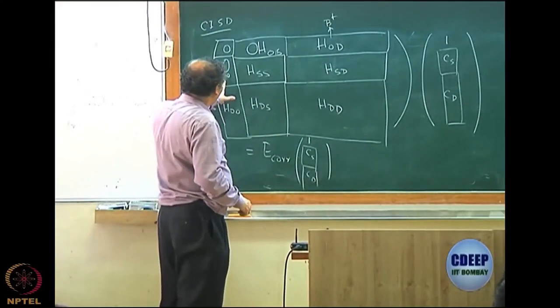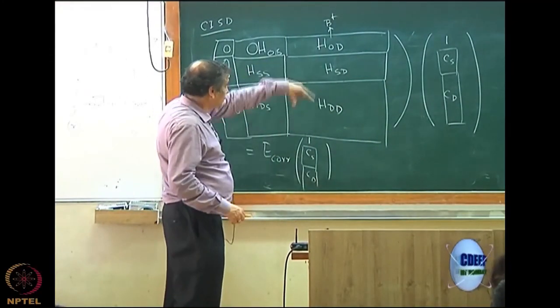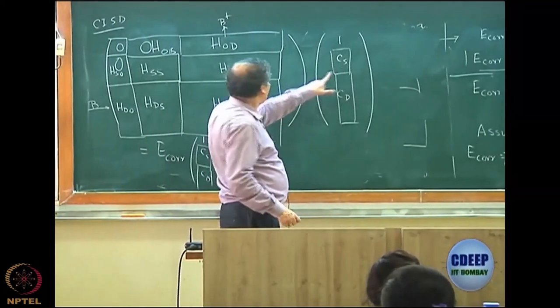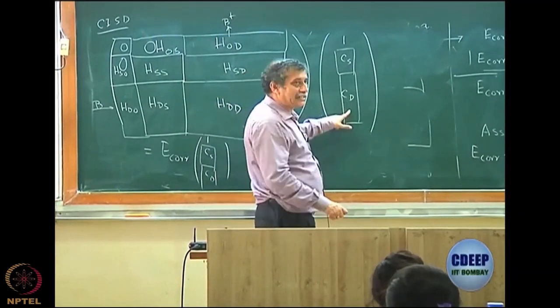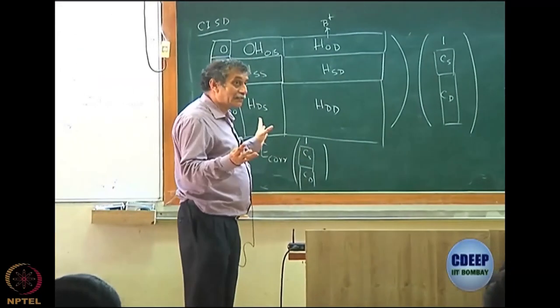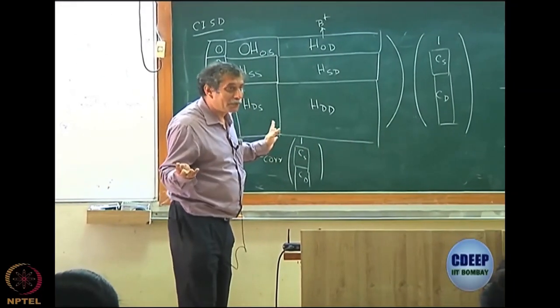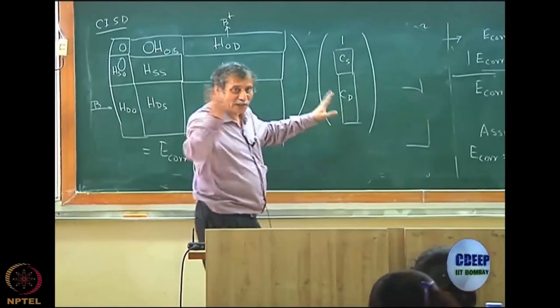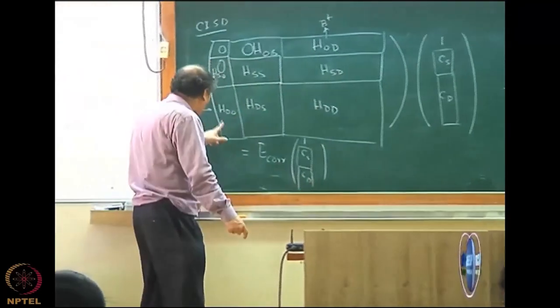This is 0 of course. So this is second row times the column. Now, HSS will act on CS plus HSD will act on CD to give you E correlation CS. So I have a CS equation. Do I require it? No, because my E correlation is B dagger C. So I require only CD. So I do not care about CS equation, but come to CD.